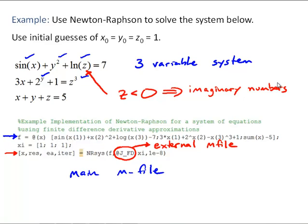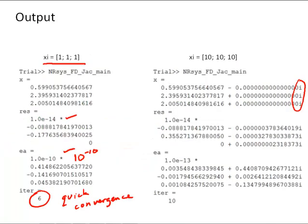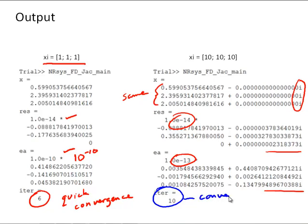But, no big deal. MATLAB keeps chugging along. We do have imaginary components to our residual and our approximate relative error values. But, that's all very small numbers. And we did eventually converge on the same solution to the system of equations. Though, one thing to note is, because the initial guesses were farther away from the value, the convergence was a little slower.